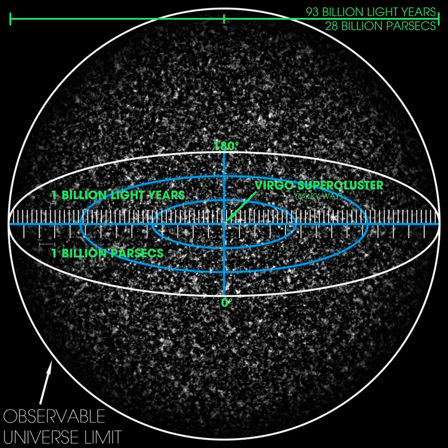Every location in the universe has its own observable universe, which may or may not overlap with the one centered on Earth. The word 'observable' in this sense does not refer to the capability of modern technology to detect light or other information from an object, or whether there is anything to be detected.